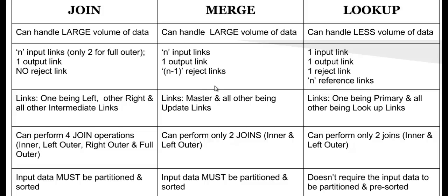Those are the main differences between Join, Merge, and Lookup stages. You can frame it as: memory-wise, link-wise, and operations-wise — those are the three main categories. Reject links and partitioning are additional information. That's it — thanks for watching, and I'll make a new video pretty soon. Thank you guys so much!